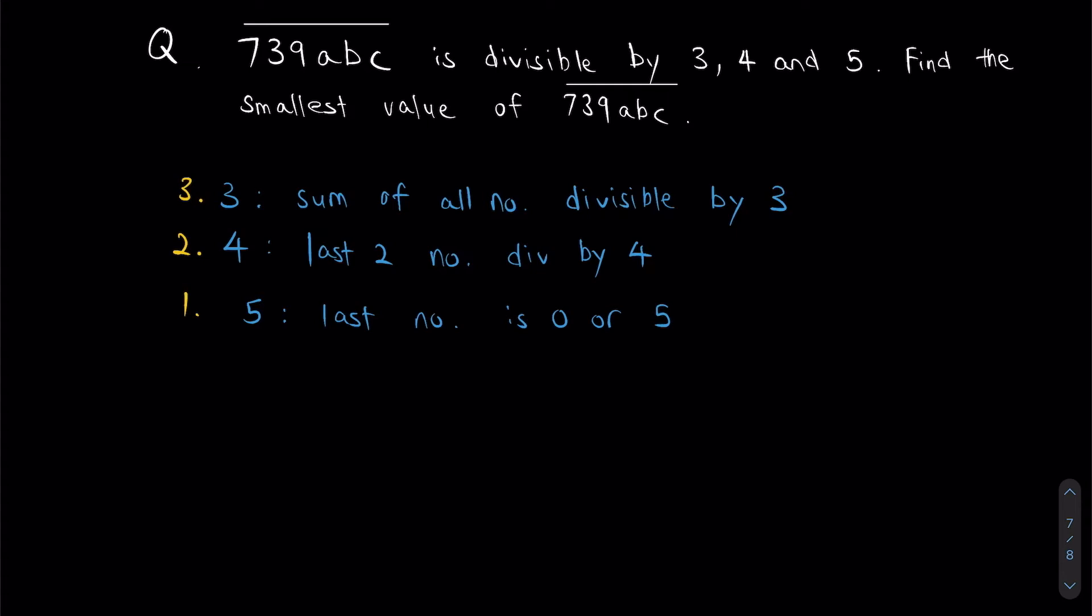So my last number, that's C. C has to be either a 0 or 5. However, if we think about the divisibility rule of 4 now, it says the last 2 numbers must be divisible by 4. And let's think, can any number ending with 5 ever be divisible by 4? No, right? Therefore, there's only one possible answer for C, and that's 0. We can't have this. I'm going to reject this number right here.